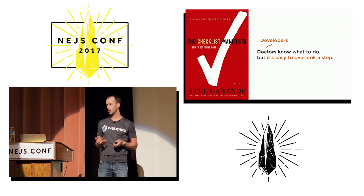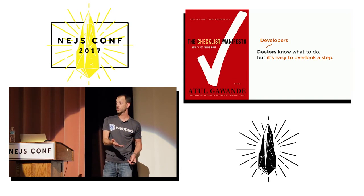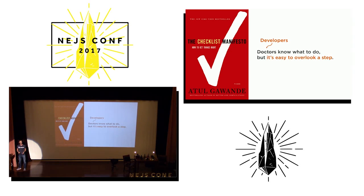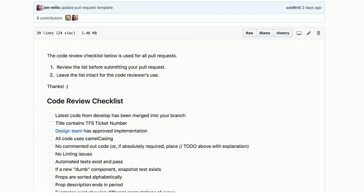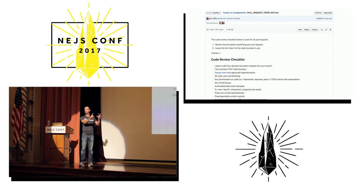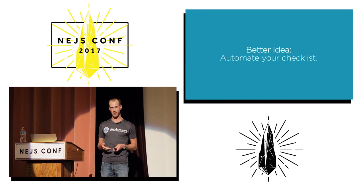In summary: doctors know what to do, but it's easy to overlook a step. In the same way, we as developers also know what to do, but do you ask yourself those 40 questions every time you start a new JavaScript project? On my team we've embraced this checklist idea — we created a file called pull-request-template.md. Pro tip: if you use GitHub, create a file with this name and every time somebody creates a pull request, it will automatically generate this within it. That way all our pull requests have our code review checklist right there inside, automatically.